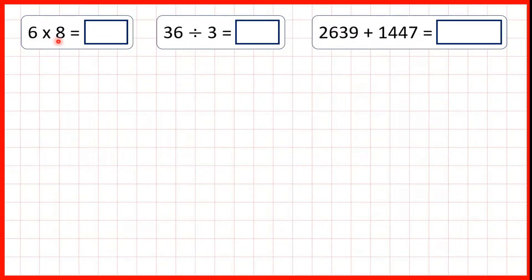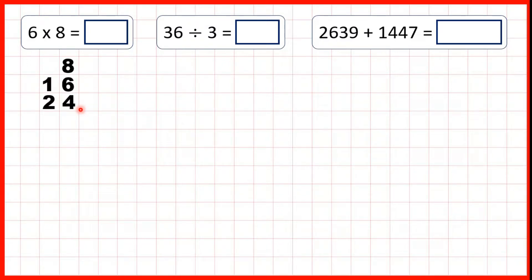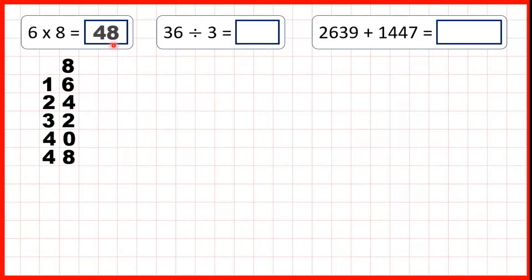6 times 8. So, if we don't know, we can count up in 8s. So, 8, 16, 24, 32, 40, and the 6th multiple of 8 is 48. So, that's our answer.